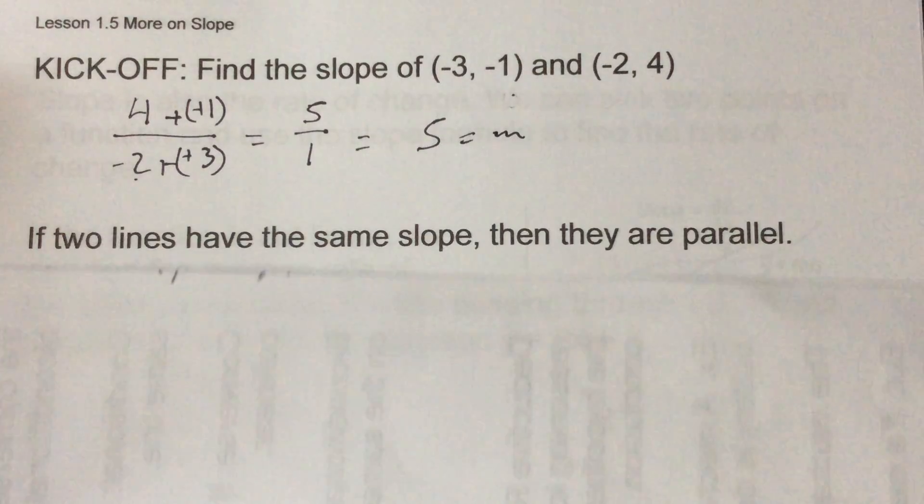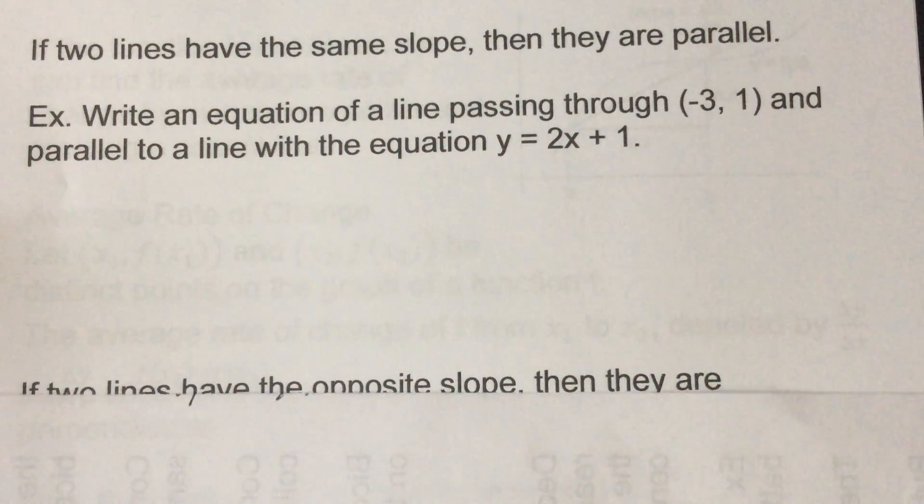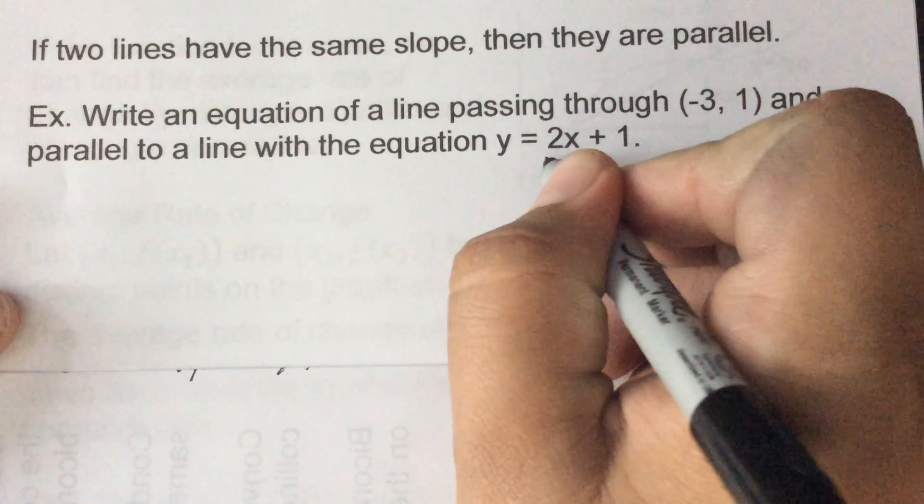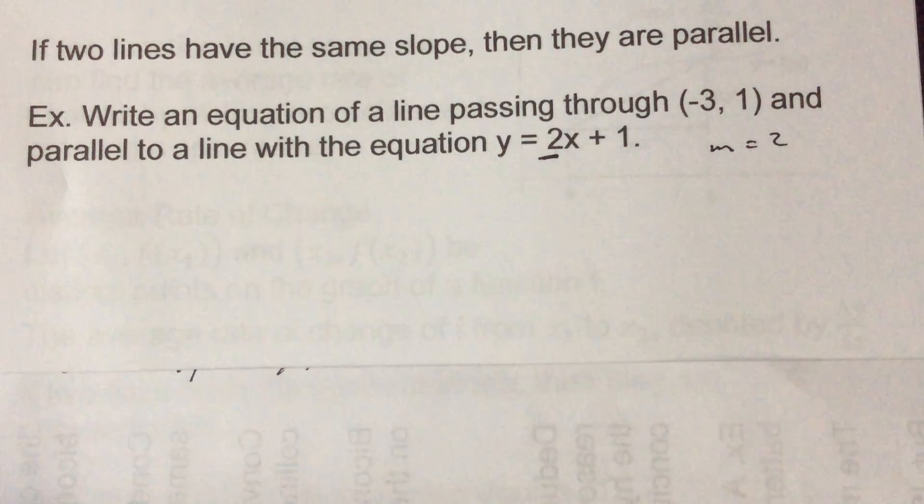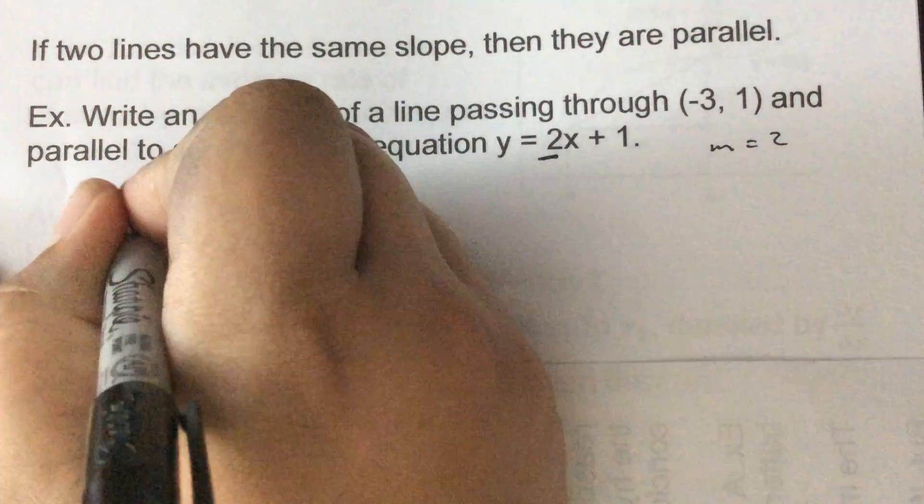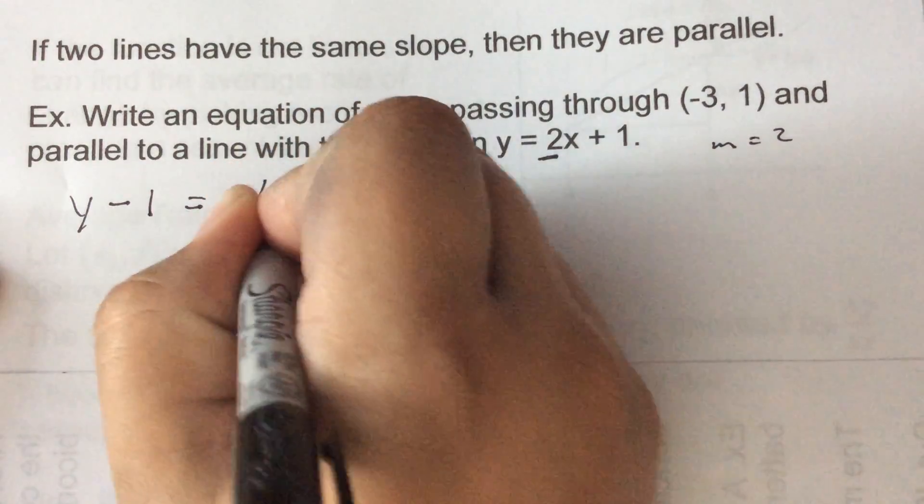Now continuing on, if we have the same slope then we say that the lines are parallel. So to write an equation of a line that is parallel we would use the same slope. Here it's always what's in front, so m would equal what's in front of the x, that's your slope. So we're on the same slope, so y minus y of our point one equals our slope two, parentheses x minus x of our point which would be plus 3 in this case.